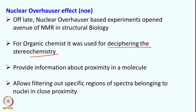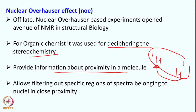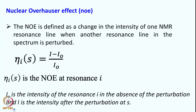The NOE or Nuclear Overhauser Effect provides information about the proximity of nuclei in a molecule. If two protons are close in space, this will be shown in the NOE experiment — it is a through-space correlation, not through-bond, unlike many other experiments. This also allows filtering specific regions of the spectra that belong to nuclei in close proximity in space. NOE can be defined as the change in the intensity of one NMR resonance line when another resonance line in the same spectrum is perturbed.